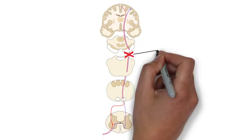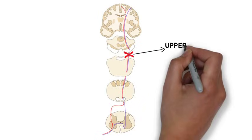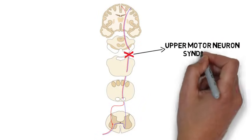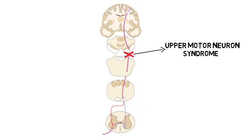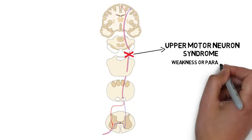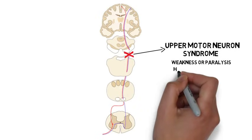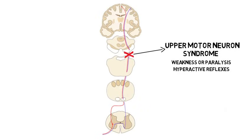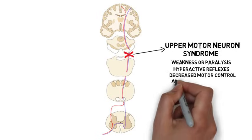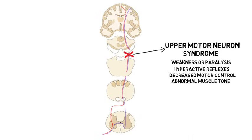Damage to the corticospinal tract can lead to a collection of symptoms known as upper motor neuron syndrome, which involves symptoms like weakness or paralysis, hyperactive reflexes, decreased motor control, and either increased or decreased muscle tone.